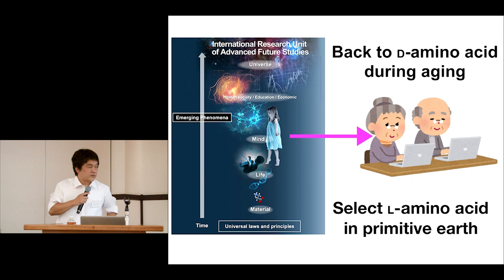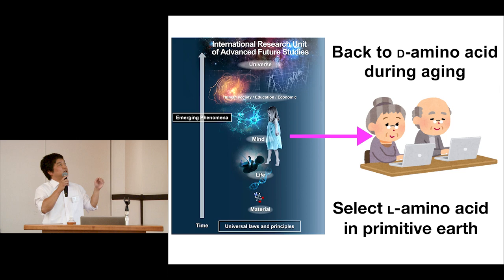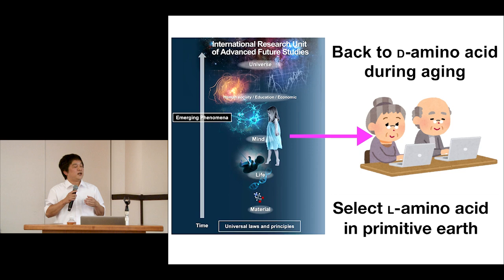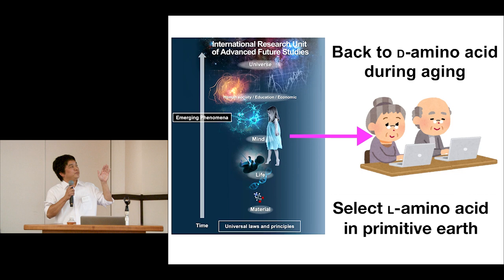Today I talked from the origin of life to D-amino acid increasing during aging. It's very interesting — the origin of life is a very big event, but our life is only maybe a hundred years. Somebody decided homochirality, but that homochirality breaks down within our hundred-year lifespan. I find D-amino acid research very interesting, from the primitive earth to human aging and also in space and the universe. Thank you for your attention.